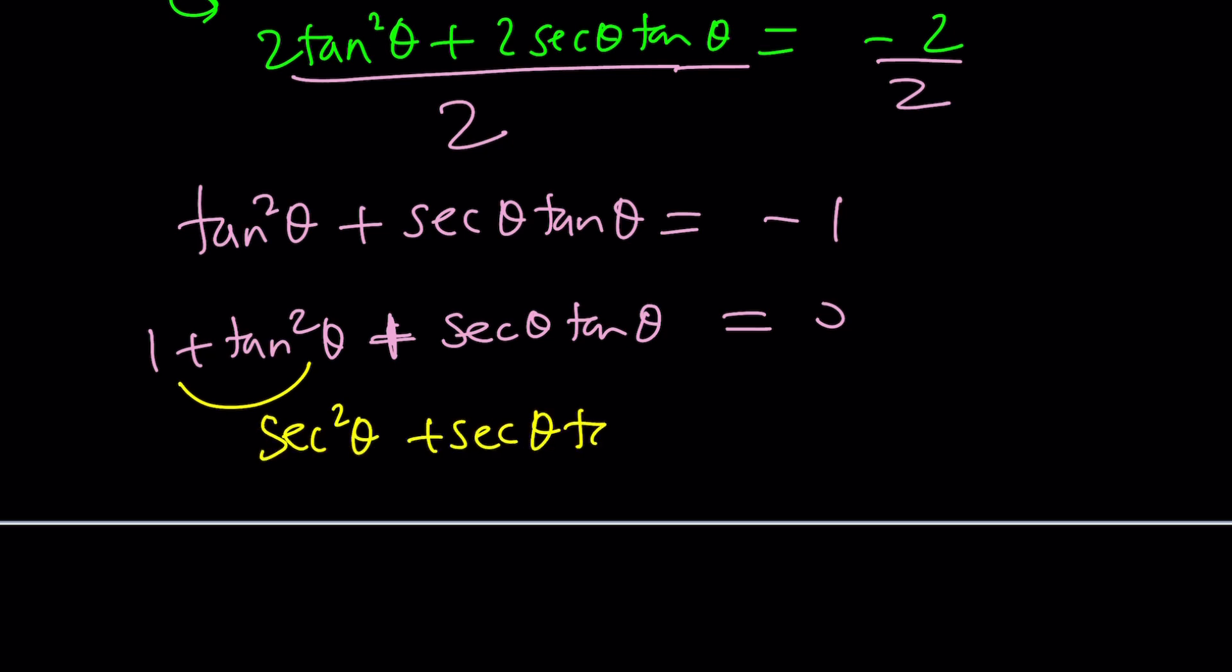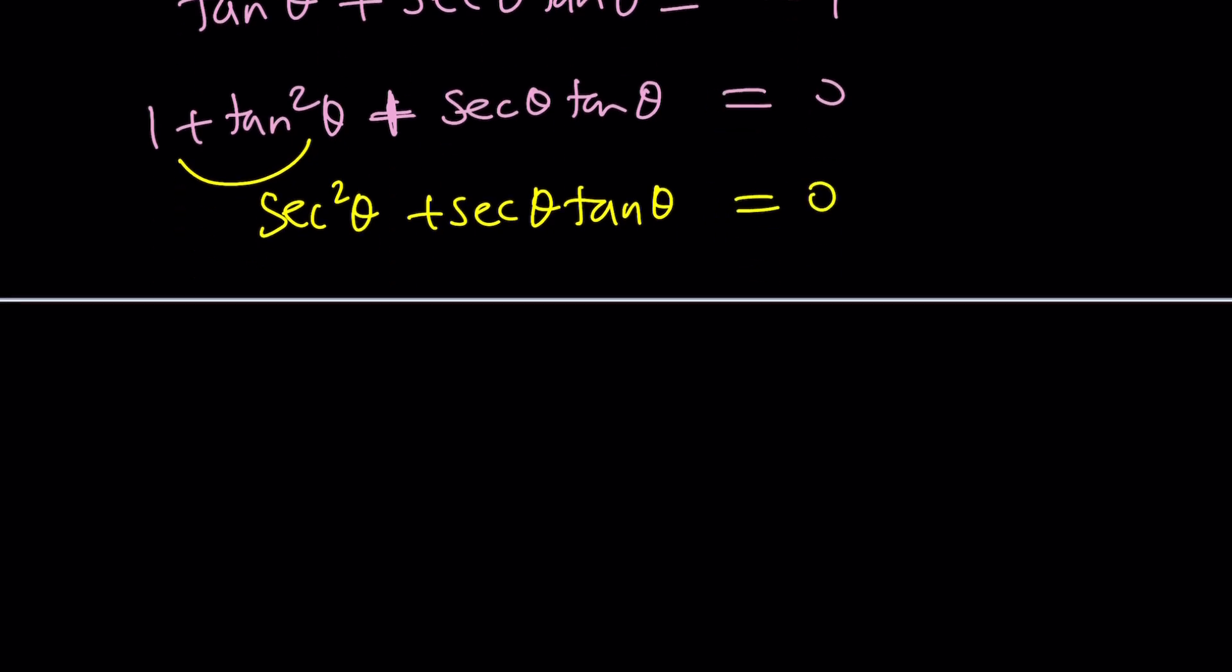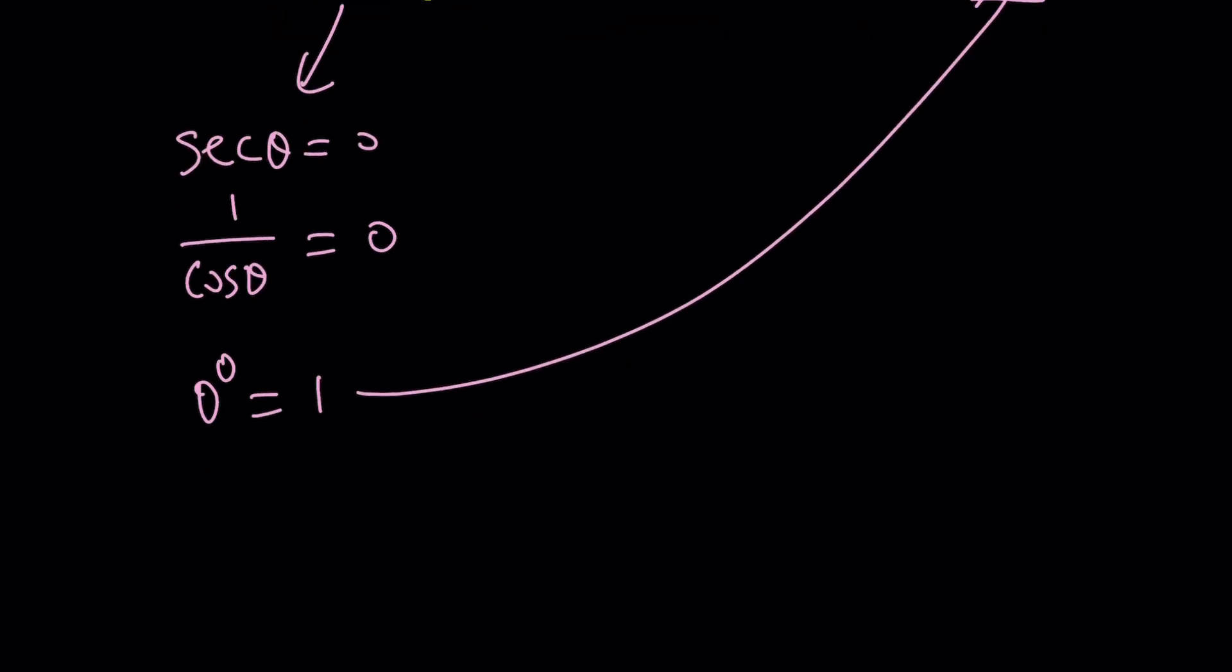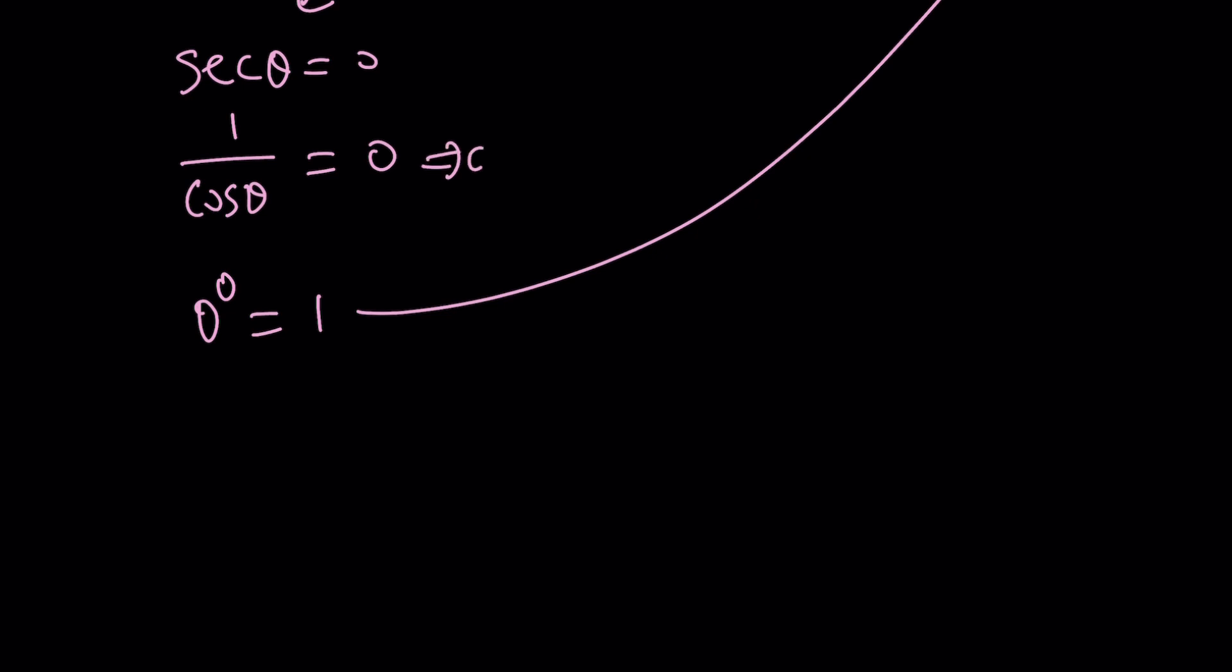On top of that, we have 1 + tan²θ, which can be written as sec²θ. So we kind of go back and forth between these identities, but they're very helpful. Now this is factorable: we can factor out sec θ, and then we get sec θ(sec θ + tan θ) = 0. Super nice because our equation is factored in a very simple form. Now if we look at each piece separately, if sec θ = 0, what does that mean? It means 1/cos θ = 0. Isn't that weird? Does that mean cos θ = 1/0? But 1/0 is undefined.